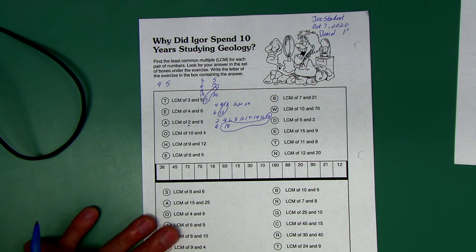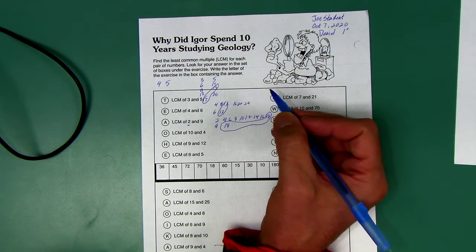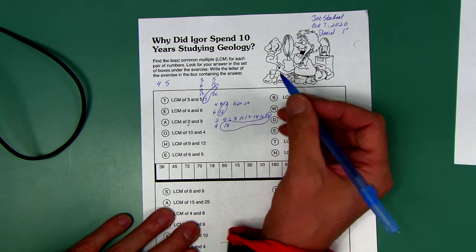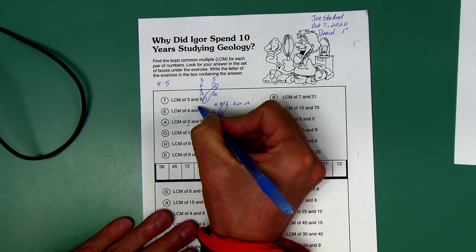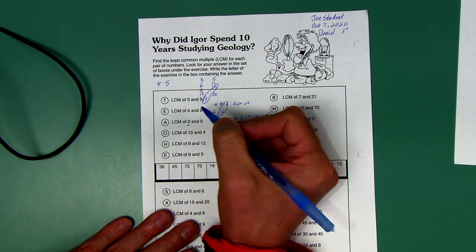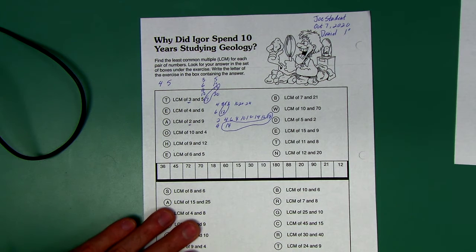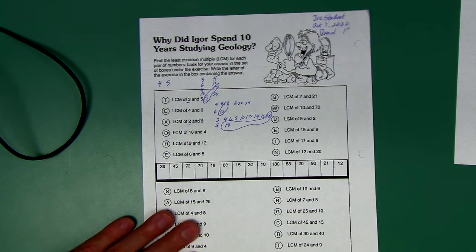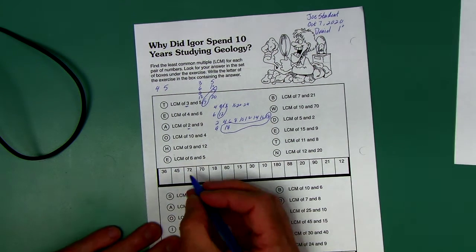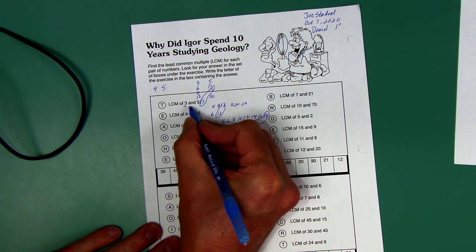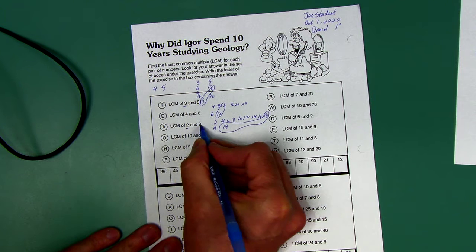Now always when you have two numbers, one of the multiples will be the product of those two numbers. Three times five is a multiple of three and a multiple of five, but not always the least common multiple. Three is prime, and there are some other prime numbers in here. There is one exception: you want to see if that prime number fits into the other number. Does three fit into five? Not evenly. Does two fit into nine? Not evenly.